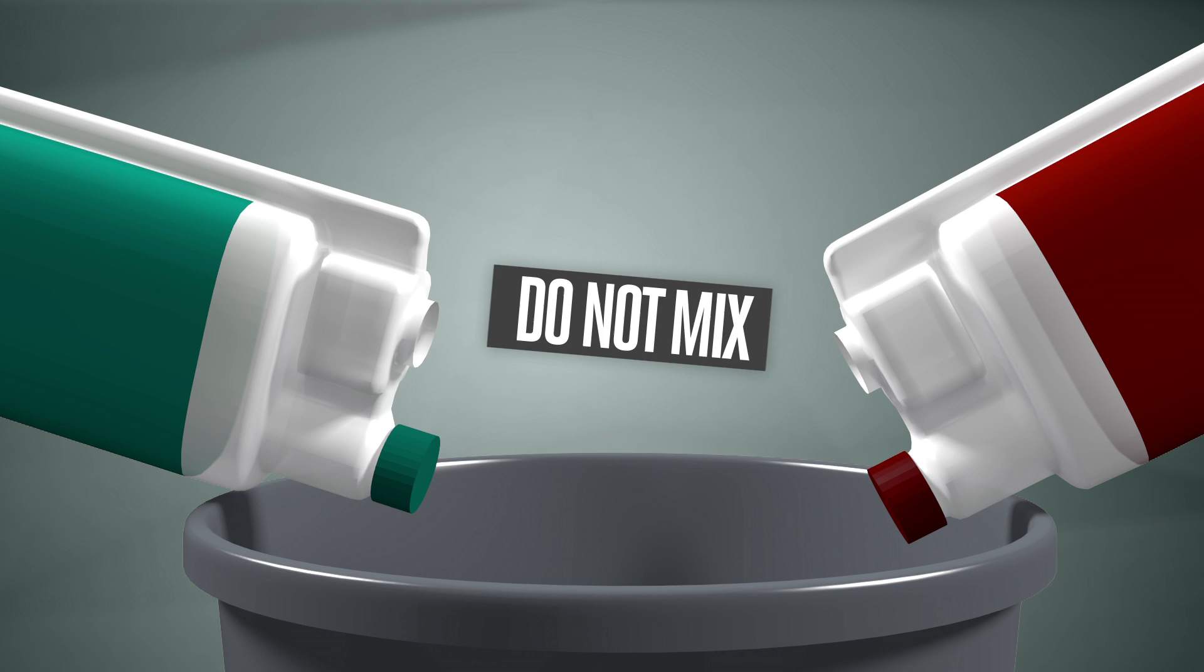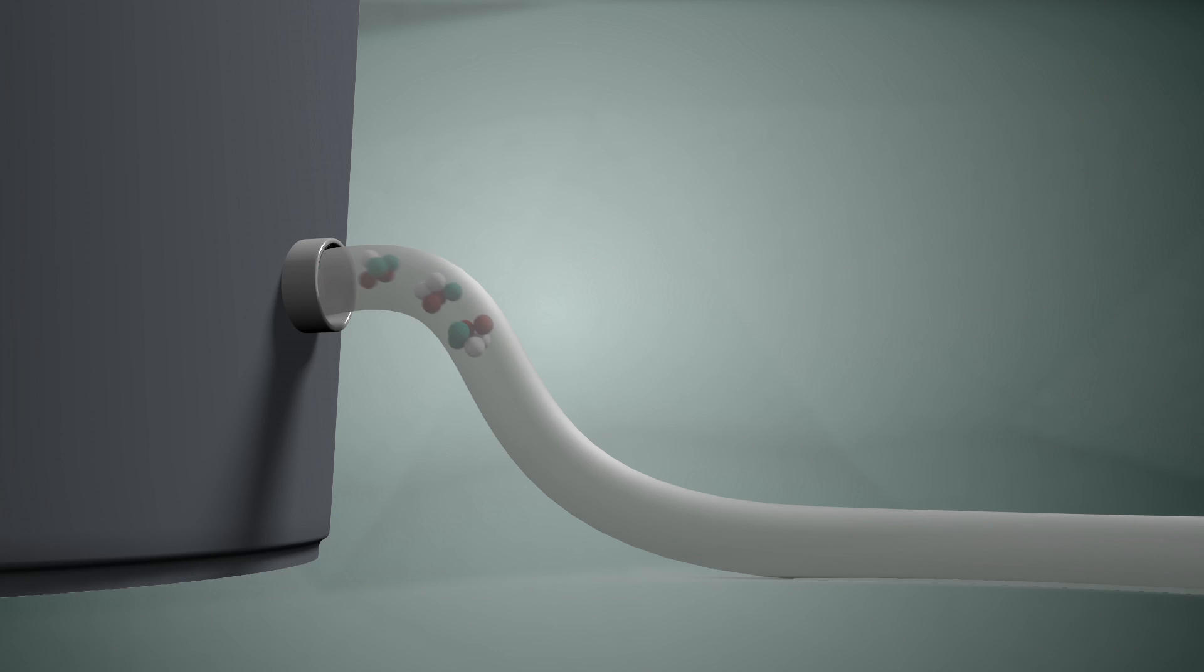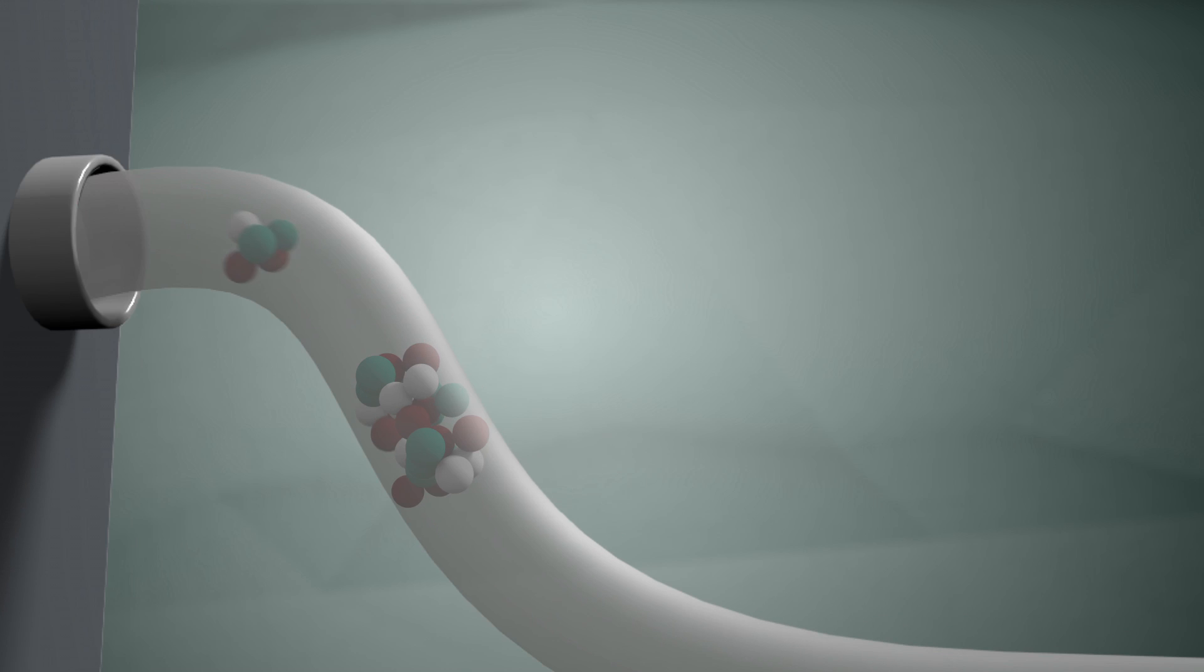Before we begin, just remember, A and B feeds cannot be mixed together at the same time because the nutrient solutions are highly concentrated and will flock together and sink to the bottom of the tank. By adding these feeds too quickly to the water, deposits can form in the nutrient tank and cause blockages in your irrigation system.